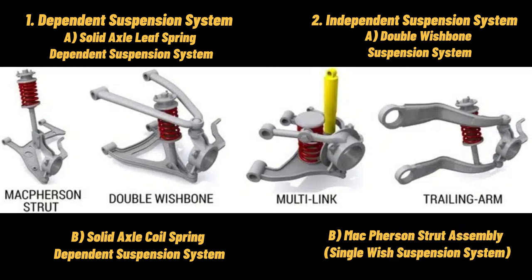B. McPherson Strut Assembly Single Wishbone Suspension System. Earl S. McPherson, an engineer with Ford USA, developed a single wishbone with a telescopic strut type system in 1947. In this system, on the lower side of the wheel hub, a lower control arm is located with a flexible joint. On the upper end of the wheel hub, a shock absorber or strut is placed, which is also attached to a flexible joint. Both the strut and lower control arm are connected to the frame of the vehicle with a flexible joint.